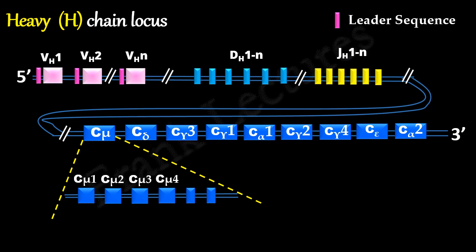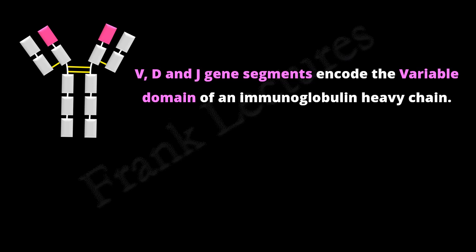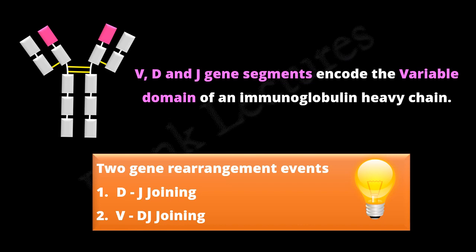In case of heavy chain locus, it is the V, D and J gene segments that encode the complete variable domain of heavy chain polypeptide. V, D, J recombination in heavy chain locus involves two gene rearrangement events. First is D-J joining, and second is D-J-V joining.